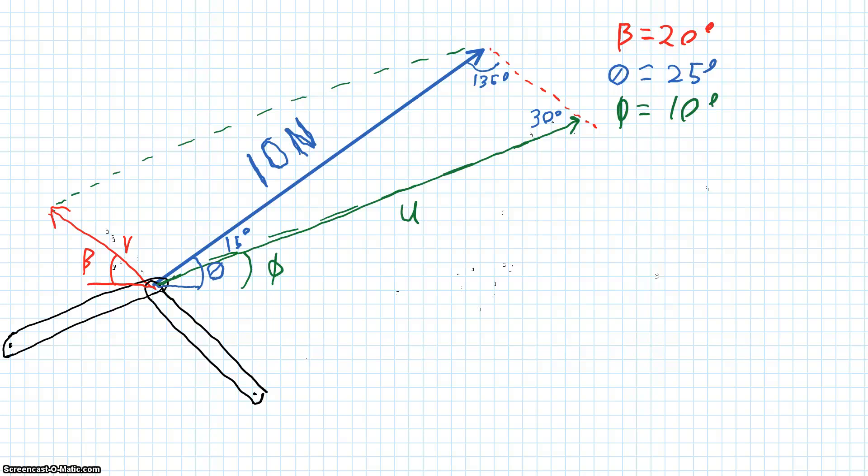If we want to start by solving for this vector u, then we can write out 10 newtons over the opposite angle, so that we can solve for this angle sin 30 degrees is equal to u over the sin 135 degrees. And that gives us that the component of this 10 newton force along this u axis is going to be 14.1 newtons.